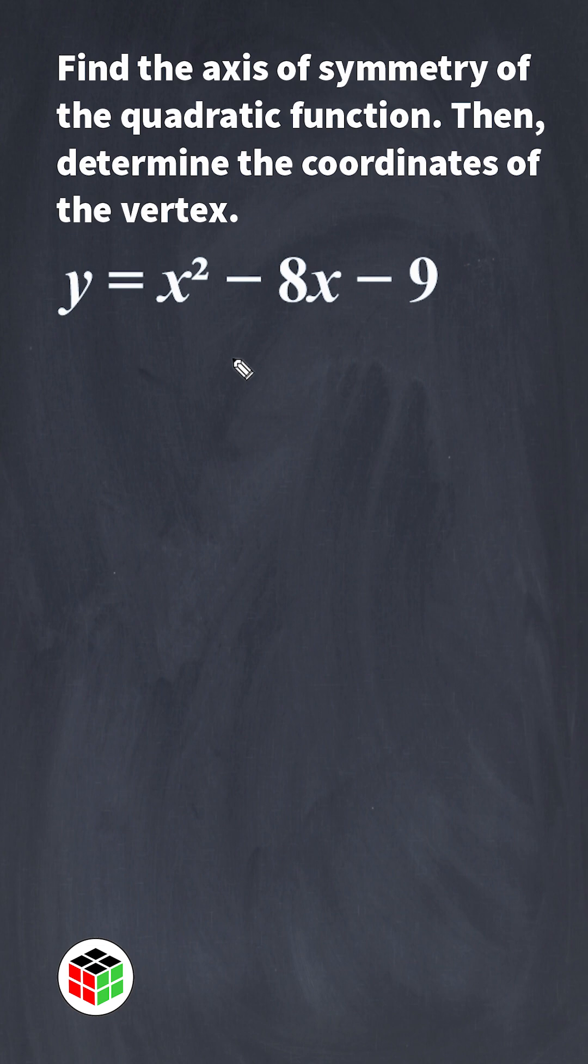To find the axis of symmetry of a quadratic, we use the equation negative b divided by 2a. Now, this equation is already in standard form, and the coefficient of your x squared term is going to be your a term, the coefficient of your x term is going to be your b term, and this constant right here is our c term.